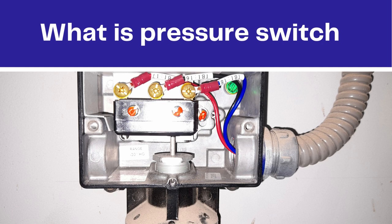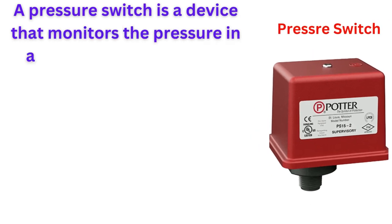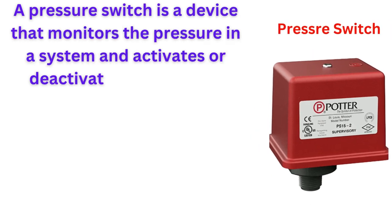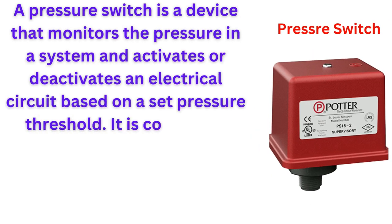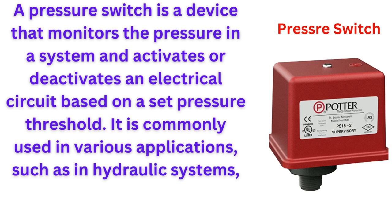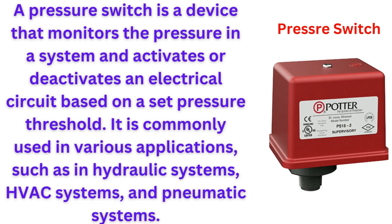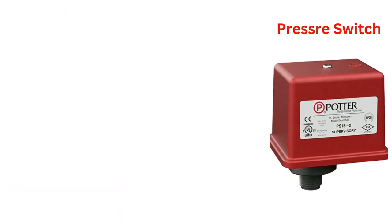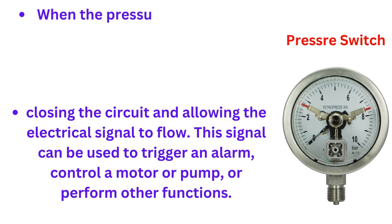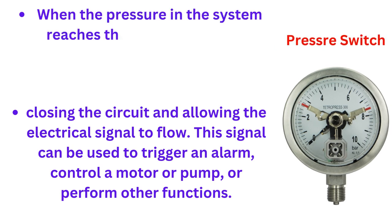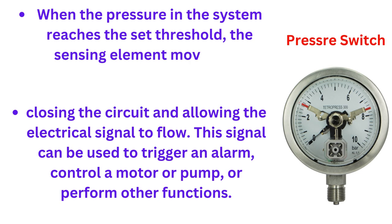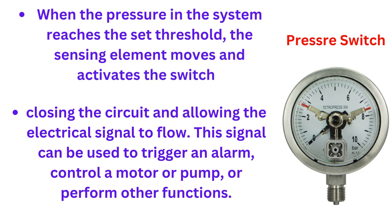A pressure switch is a device that monitors the pressure in a system and activates or deactivates an electrical circuit based on a set pressure threshold. It is commonly used in various applications, such as in hydraulic systems, HVAC systems, and pneumatic systems.